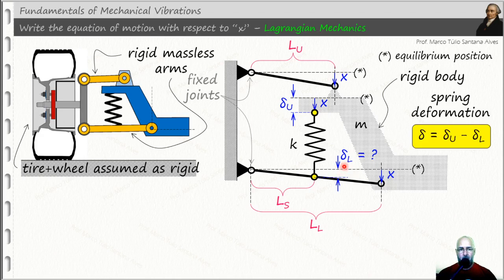But how? Before we go, we have to calculate the spring deformation. It's simple, it's just delta U minus delta L, as you can see here, highlighted in yellow.